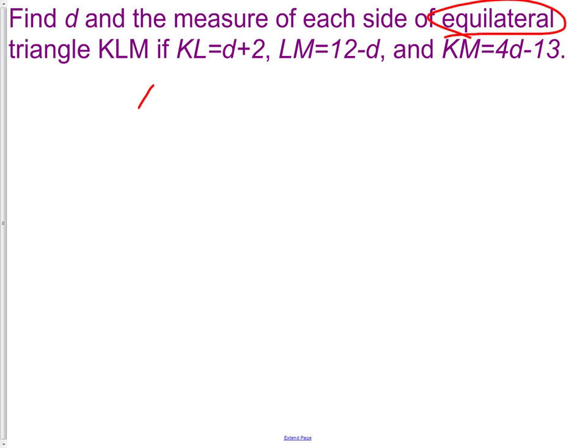We have a triangle here. We'll draw it like an equilateral. We'll put d+2, 12-d, and 4d-13. Now, as I just reviewed for you there, all three angles, or excuse me, all three sides are going to be the same measurement.